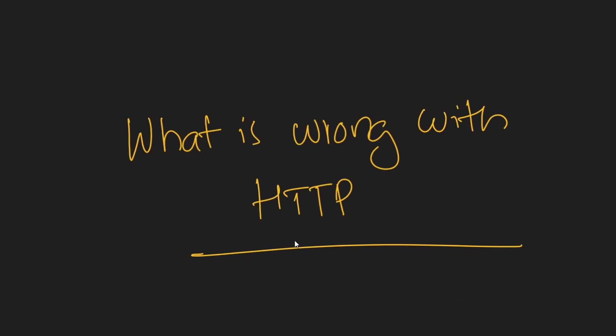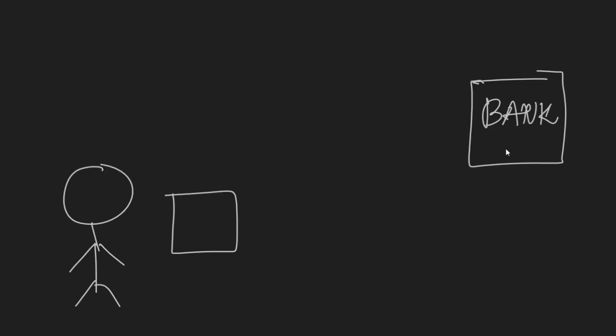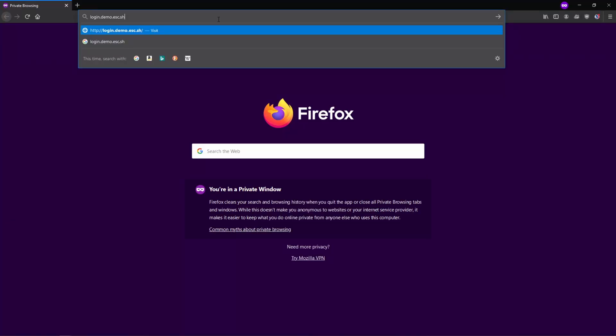So what exactly is wrong with HTTP? Let's say this is you with your computer in a coffee shop connected to a Wi-Fi network, and you're connecting to your bank's website using HTTP. The problem with HTTP is that everything you send from your computer to the server is sent as plain text, meaning anybody looking at the packets can read them in plain English — including your username and password.